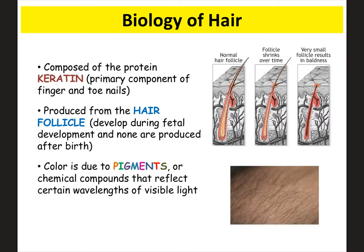Hair is made of an important protein called keratin. Hairs are produced from hair follicles. A normal hair follicle promotes hair growth, but if someone goes bald, the follicle shrinks until it's so small that no hair actually grows. You get these follicles during fetal development and don't get any more after birth, which is why baldness can't really be fixed. The color in a person's hair is due to the different pigments present in the hair itself.